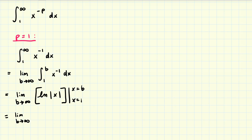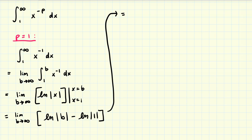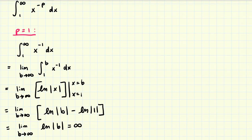Plugging in the values, we get the natural log of the absolute value of b minus the natural log of the absolute value of 1. Since the natural log of 1 is 0, this becomes the limit as b approaches infinity of the natural log of the absolute value of b. This limit equals infinity. So when p equals one, the improper integral diverges.